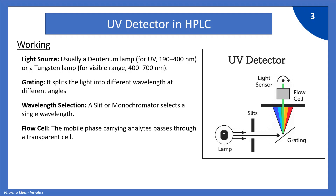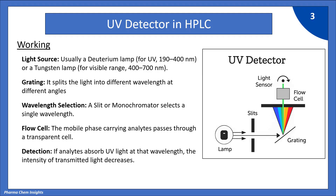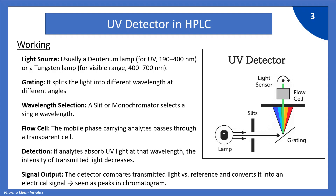The flow cell is the compartment through which the mobile phase carrying analytes passes. When the analytes enter the flow cell, they can absorb the light falling onto them. If analytes absorb UV light at that wavelength, the intensity of transmitted light decreases. The absorbed light is measured by the light sensor. The detector compares transmitted light versus a reference and converts it into an electrical signal, which appears as peaks in the chromatogram.